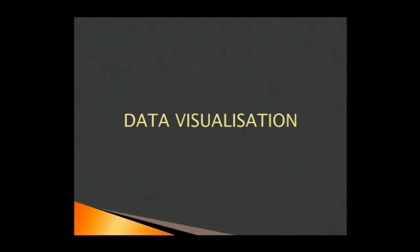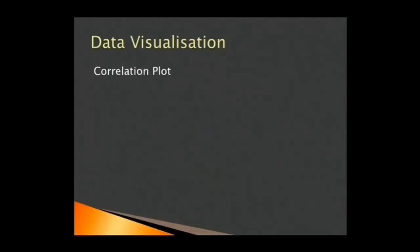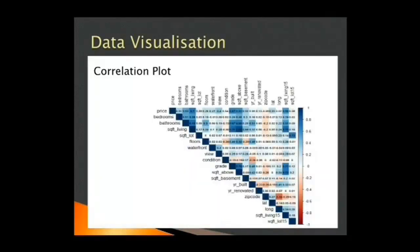Next, we visualize the data. First, we look into correlation plot, which looks like this. Here, we are concerned with the variable price and want to look at variables which are highly correlated with it. From the plot, we infer the price variable has a high positive correlation with square feet living, moderate positive correlation with grade, then square feet above, square feet living 15, and at last bathrooms.